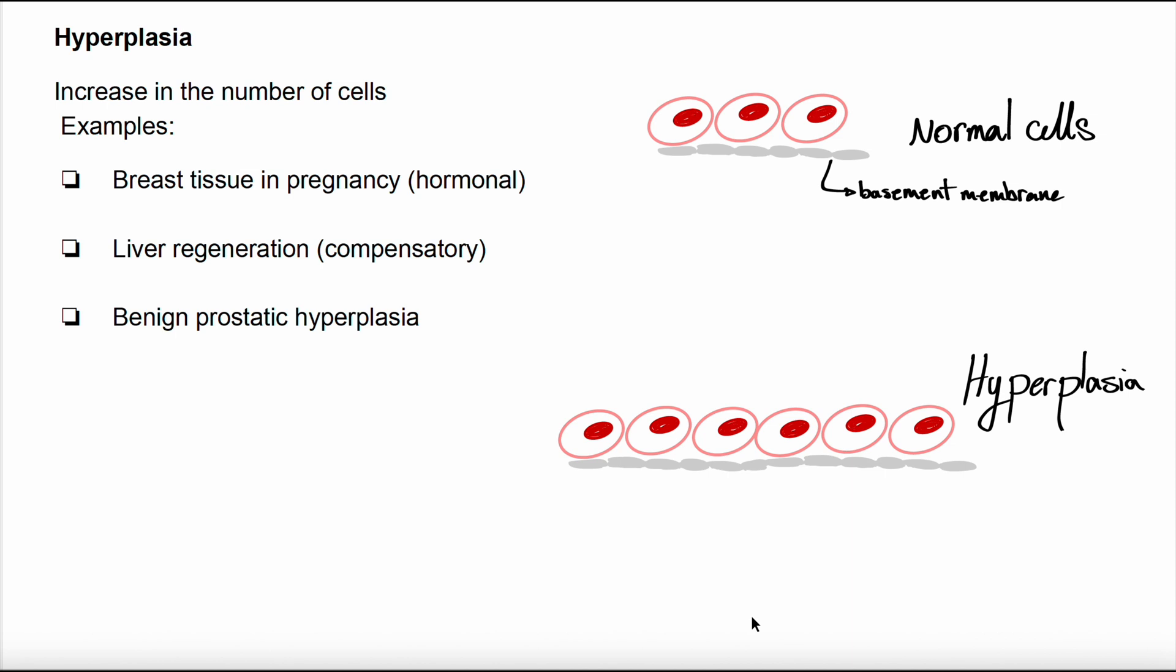For example, endometrial hyperplasia. It's thickening of uterus lining due to excess estrogen stimulation. It's abnormal. Or benign prostatic hyperplasia, BPH, which is driven by androgenic stimulation leading to increased glandular and stromal cell proliferation.